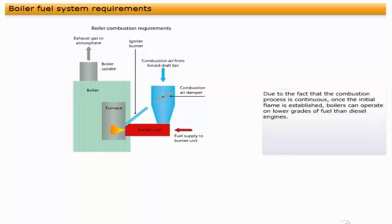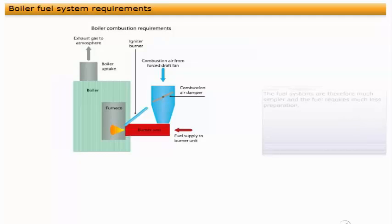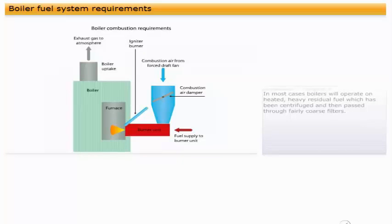Due to the fact that the combustion process is continuous once the initial flame is established, boilers can operate on lower grades of fuel than diesel engines. The fuel systems are therefore much simpler, and the fuel requires much less preparation. In most cases, boilers will operate on heated, heavy residual fuel which has been centrifuged and then passed through fairly coarse filters.